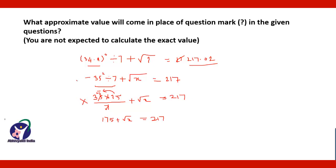You have to do this orally: 35 squared means 35 into 35 divided by 7 — it means 7 fives are 35, and 35 into 7 that will be 175 — plus root x is equal to 217.